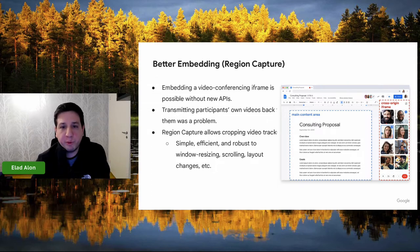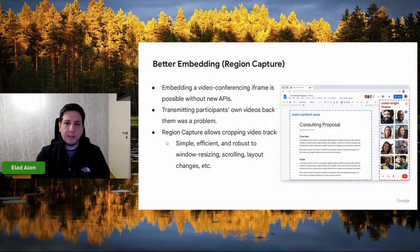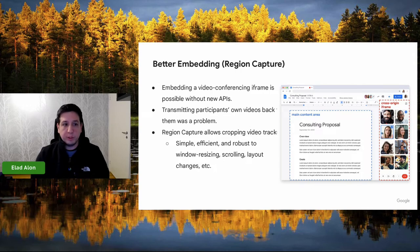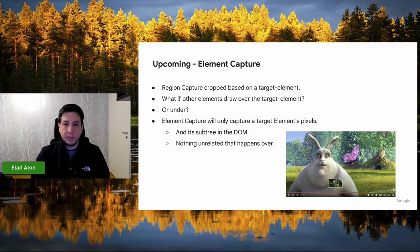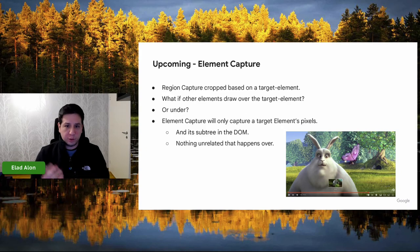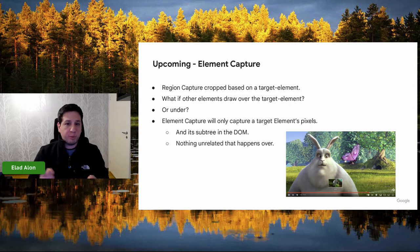We introduced an API called Region Capture, whereby you choose one element in the page, tag it, and you always end up cropping to wherever that element ends up being drawn on every single frame, making everything a lot easier and much more robust. Now, Region Capture is really useful, but it suffers from one shortcoming: if anything ends up drawing on top of your target element, those pixels also end up getting captured. So we're working on yet another API — Element Capture — that's going to let you take a specific element, and only the subtree of the DOM that starts with that element gets captured, with anything drawing on top magically erased. With that, I hand it over to Markus.